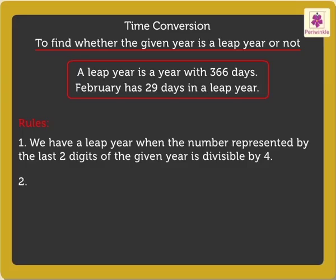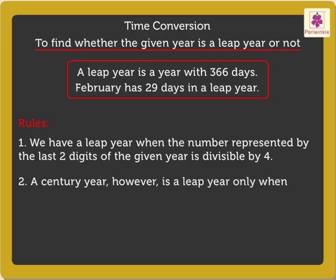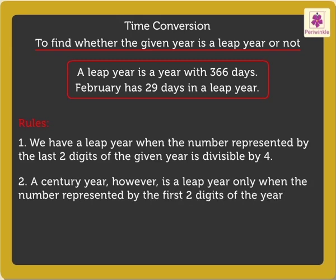Rule 2: A century year, however, is a leap year only when the number represented by the first two digits of the year is divisible by 4.